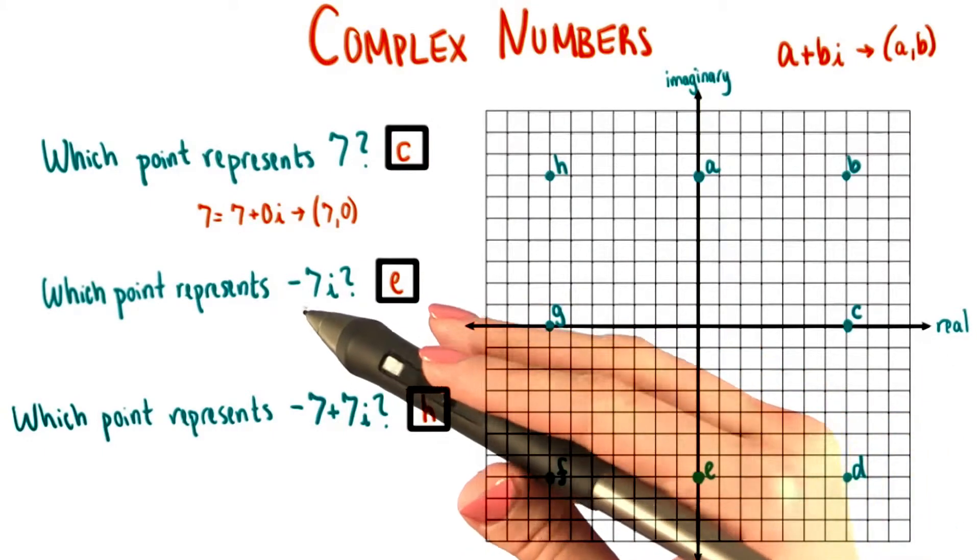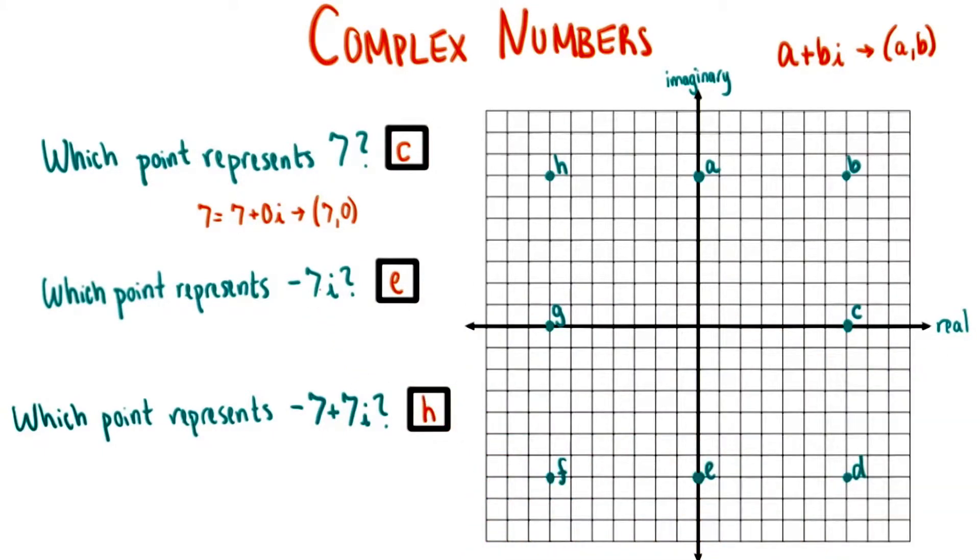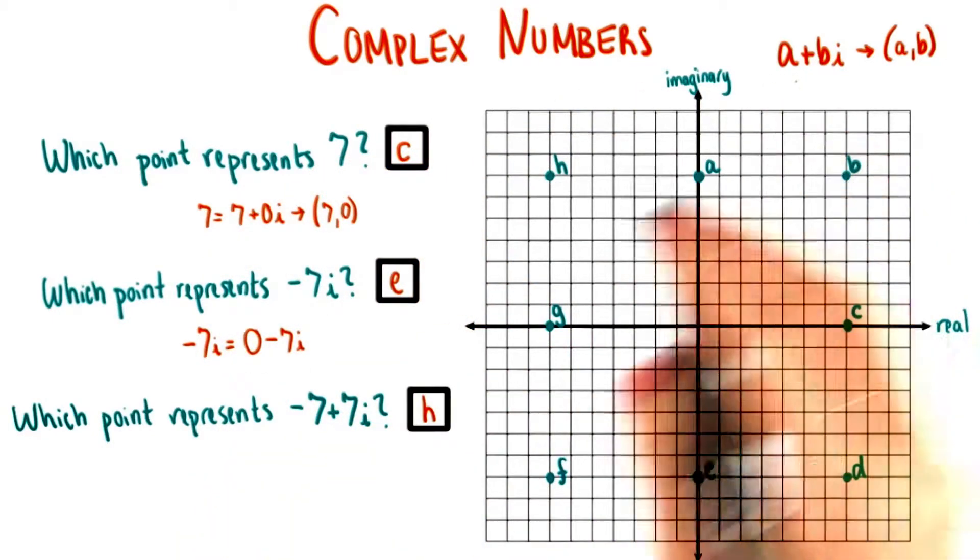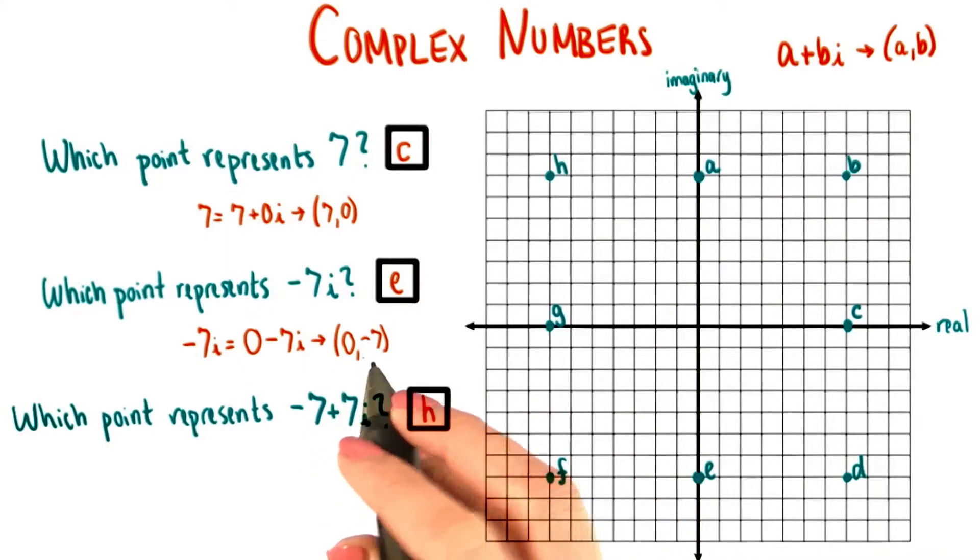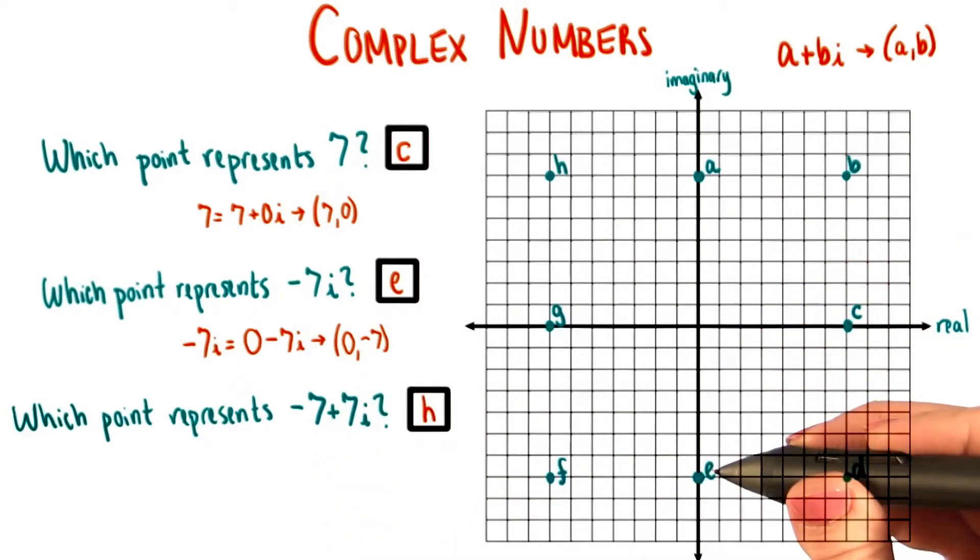A similar thing happens for negative 7i, which is just an imaginary number. Here, a is equal to 0, since there's no real part to this number. So its coordinates should be 0 comma negative 7, which is this point, e.